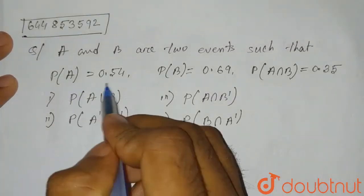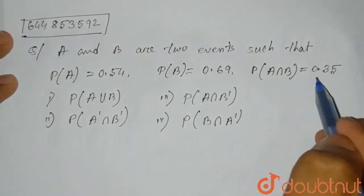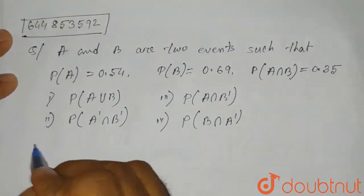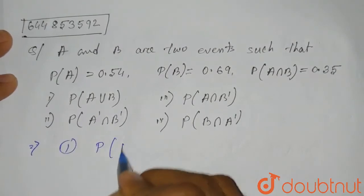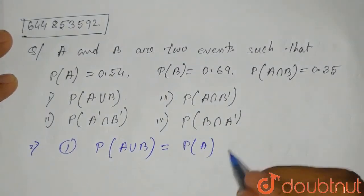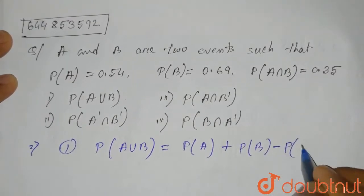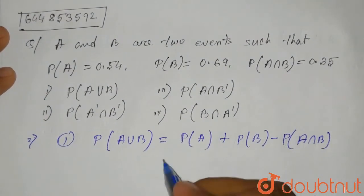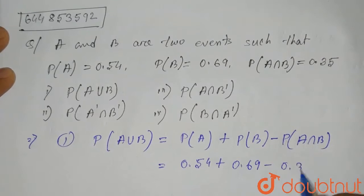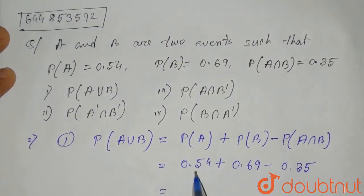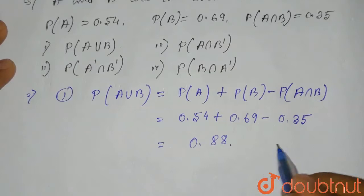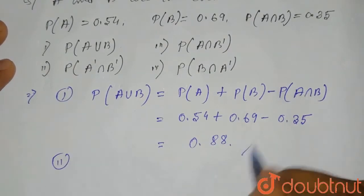A and B are two events such that P(A) = 0.54, P(B) = 0.69, and P(A∩B) = 0.35. We have to find the value of four options. First: P(A∪B). The formula is P(A∪B) = P(A) + P(B) − P(A∩B), which gives 0.54 + 0.69 − 0.35 = 0.88. So this is the first answer.